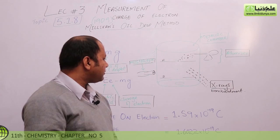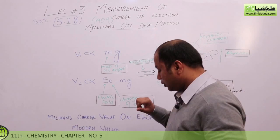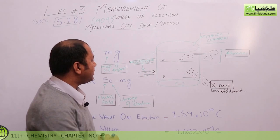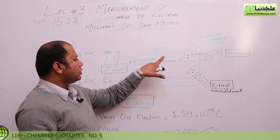Let's talk about what is going on in this experiment. When we spray the oil drops here, we have put two plates — these are known as electrodes. As everybody knows, electrodes carry positive charge and negative charge.